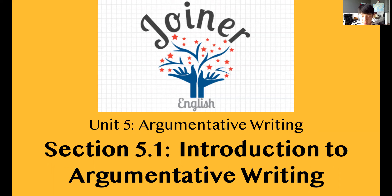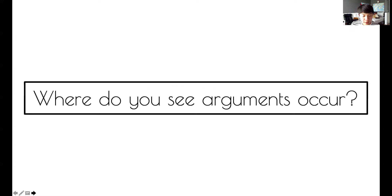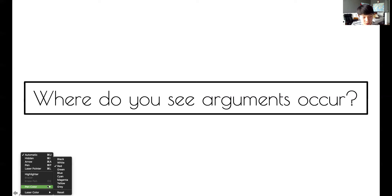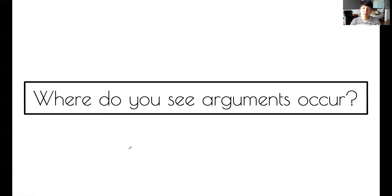For this unit, we're going to have three sections. But first of all, let's get the idea of what argumentative writing is. So where do you normally see arguments occur? Think about that for a second. An argument is either a heated discussion between two people, which is what it usually means in regular life, but it can also be just a mild disagreement.